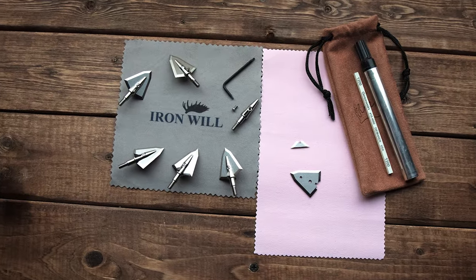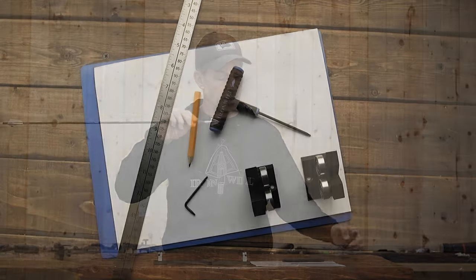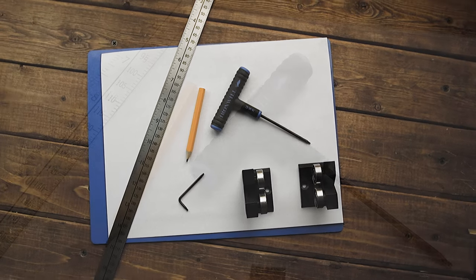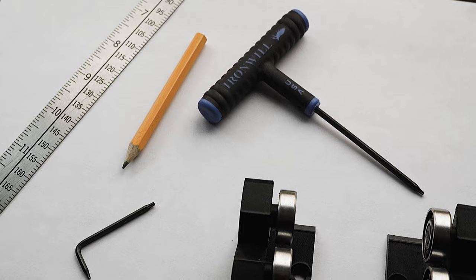So if you're replacing blades, you're going to want to make sure the blade is aligned to the ferrule. In order to do that, you're going to need a piece of paper, a ruler, a pen or pencil, and an arrow spinner.